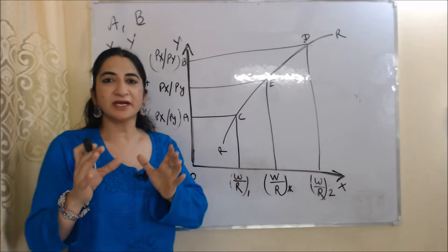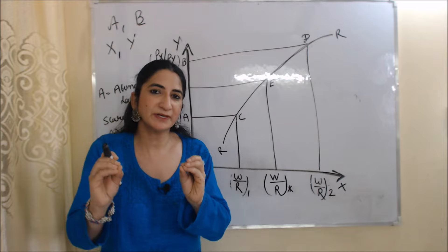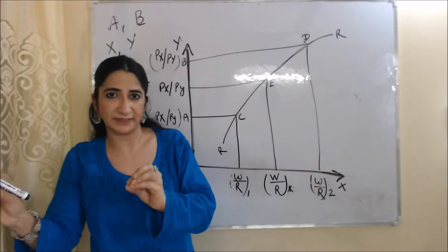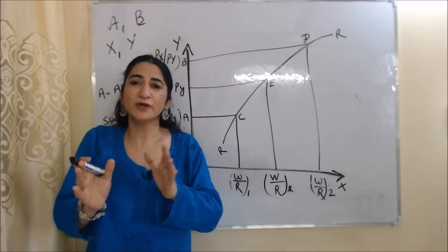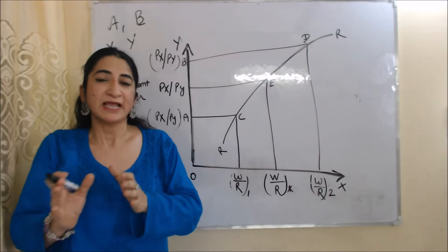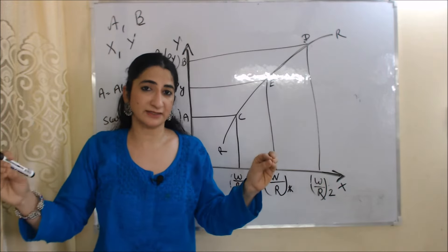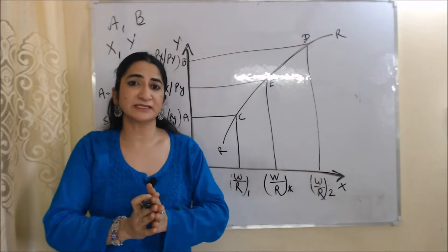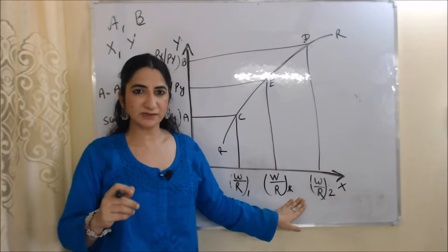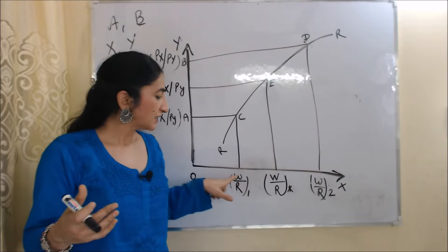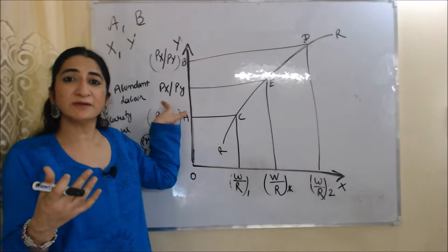Now we understand this theory with the help of this diagram. Here we assume we have two countries A and B. A has labor in abundance but scarcity of capital, and B has capital in abundance but scarcity of labor. We have two goods X and Y. X is labor intensive — in production of X we use labor in larger amount. Y is capital intensive — in production of Y we use capital in larger amount. On the X axis we have relative factor price W/R (W is wage rate, R is interest rate) and on the Y axis we have relative price of final goods.